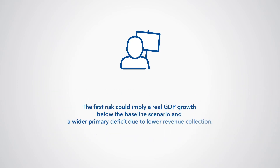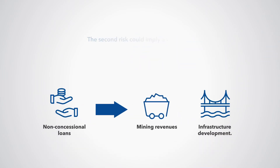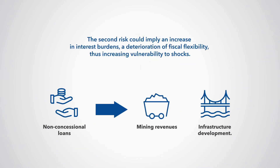The first risk would imply a real GDP growth below the baseline scenario and a wider primary deficit due to lower revenue collection, while the second risk would imply an increase in interest burdens and a deterioration of fiscal flexibility, thus increasing vulnerabilities to shocks.